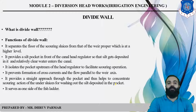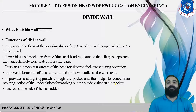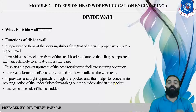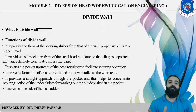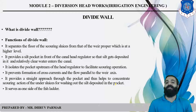There are some functions of the Divide Wall. First, it separates the flow of the scouring sluices from that of the weir proper, which is at a higher level. The scouring sluices are on the left-hand side of the weir. It also provides a silt pocket in front of the canal head regulator, so that silt gets deposited in it and relatively clear water enters the canal. This prevents silt from entering the canal. It also isolates the pocket upstream of the head regulator to facilitate scouring operations.